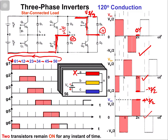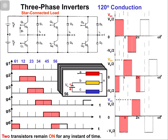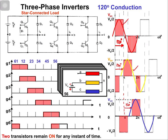Each interval is 60 degrees, so phase B is at 120 degrees from phase A, and phase C is also at 120 degrees from phase B. Our desired output voltage waveforms are sinusoidal, but we are getting quasi-square waveforms. In the next lectures we will see how we can use PWM to make it sinusoidal.